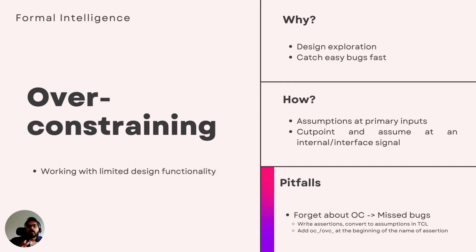Over-constraining simply means limiting the features and functionality of the design. It can be very useful during the early stages of formal verification. It helps the engineer focus energy on certain functionalities of the design and not on the entire design in the first run. It can catch bugs faster for the functionality you are targeting because you're reducing the search space for the tool, and hence the complexity and memory use. It is worth noting that if you don't handle over-constraints carefully, you will end up missing bugs.